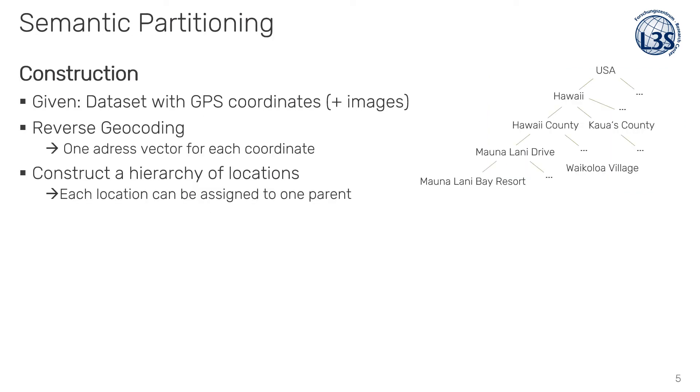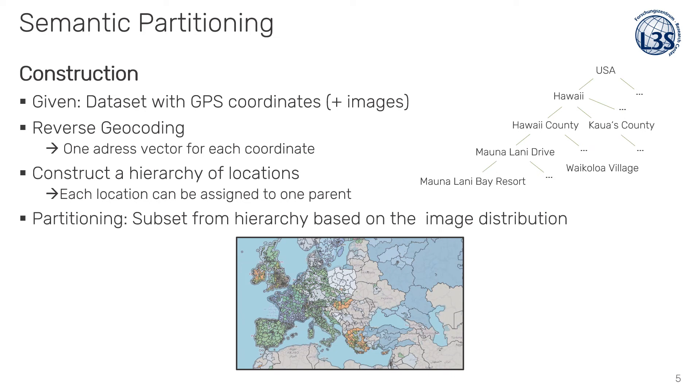Just a few words about how the semantic partitioning is constructed. Similar to the majority of approaches in the related work, we start with a dataset that contains GPS coordinates and images distributed over the Earth's surface. We apply a method called reverse geocoding to assign each coordinate an address vector and construct a hierarchy as shown on the right side. A subset of the hierarchy forms basically the partitioning. In our case, controlled by one parameter, the minimum number of images required to keep the location.